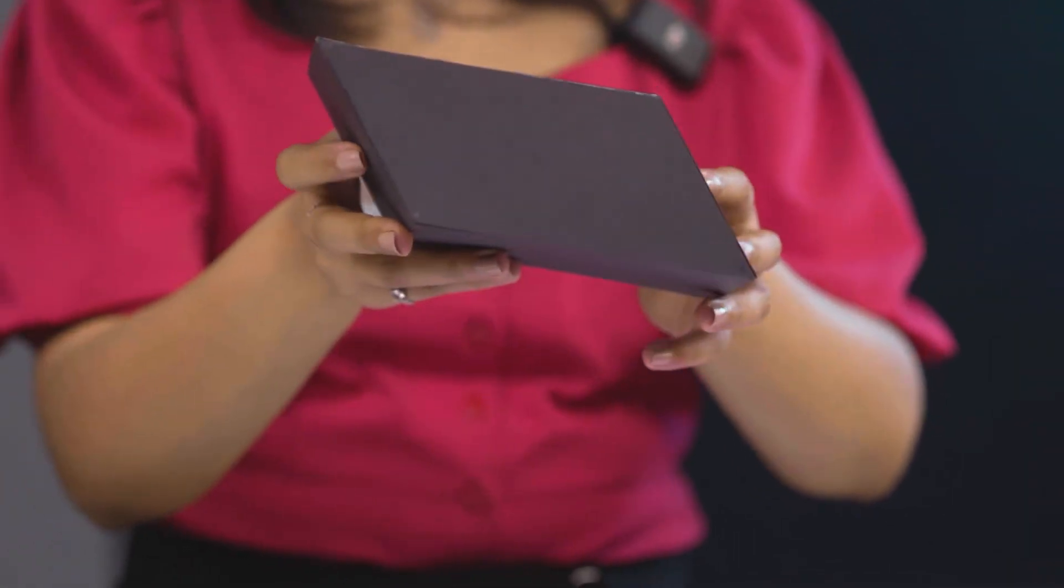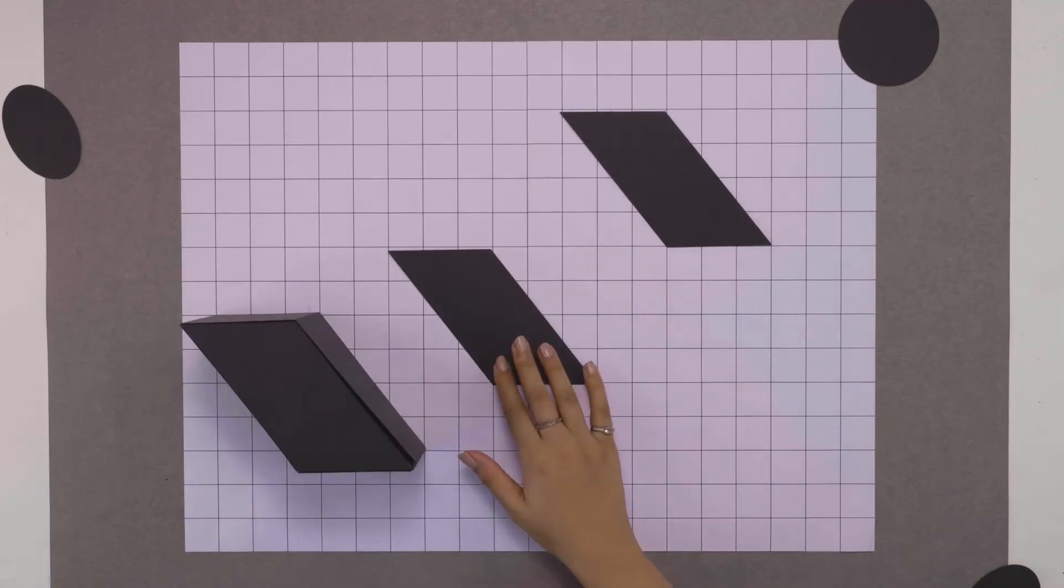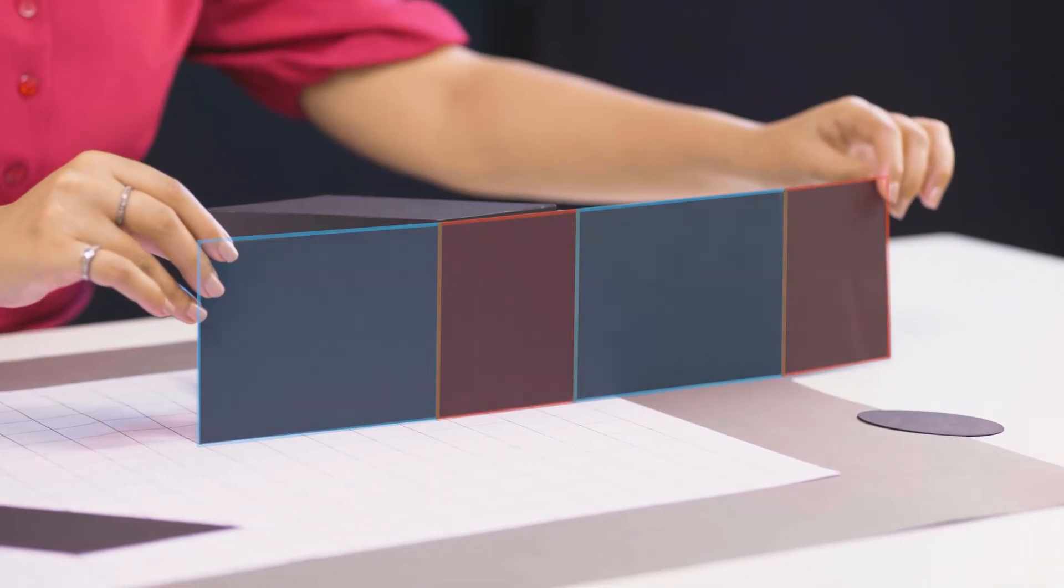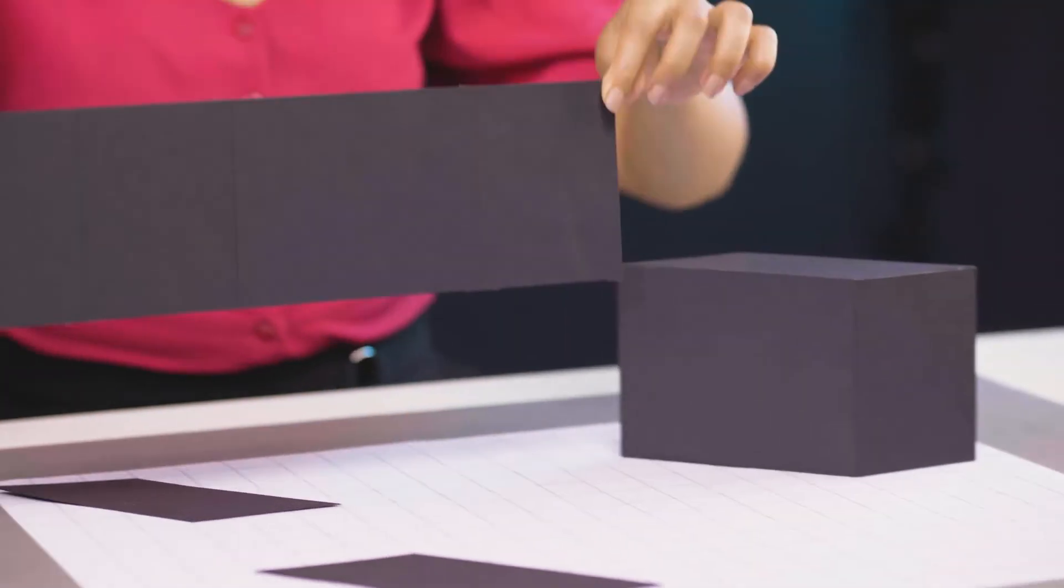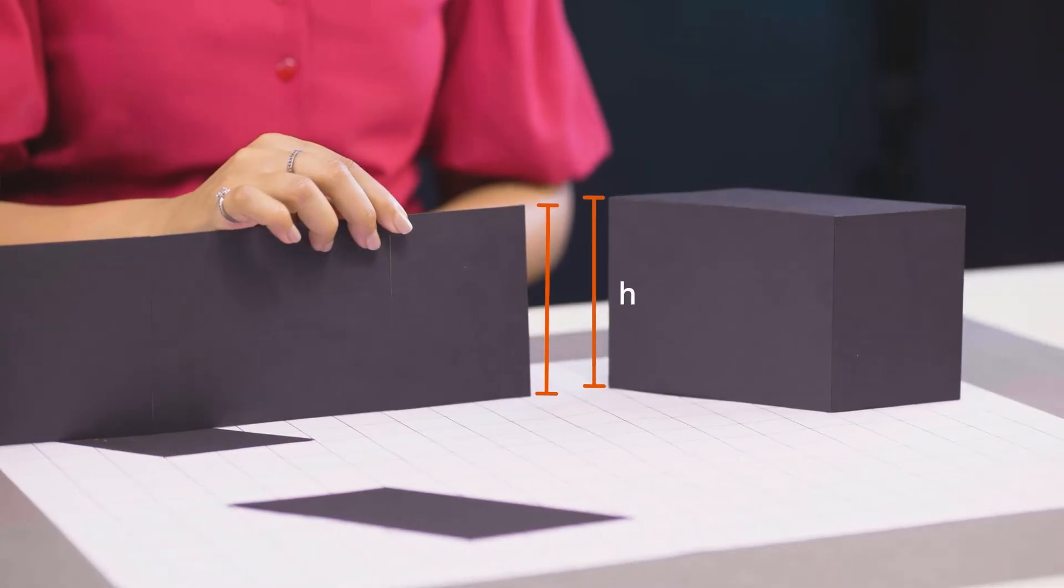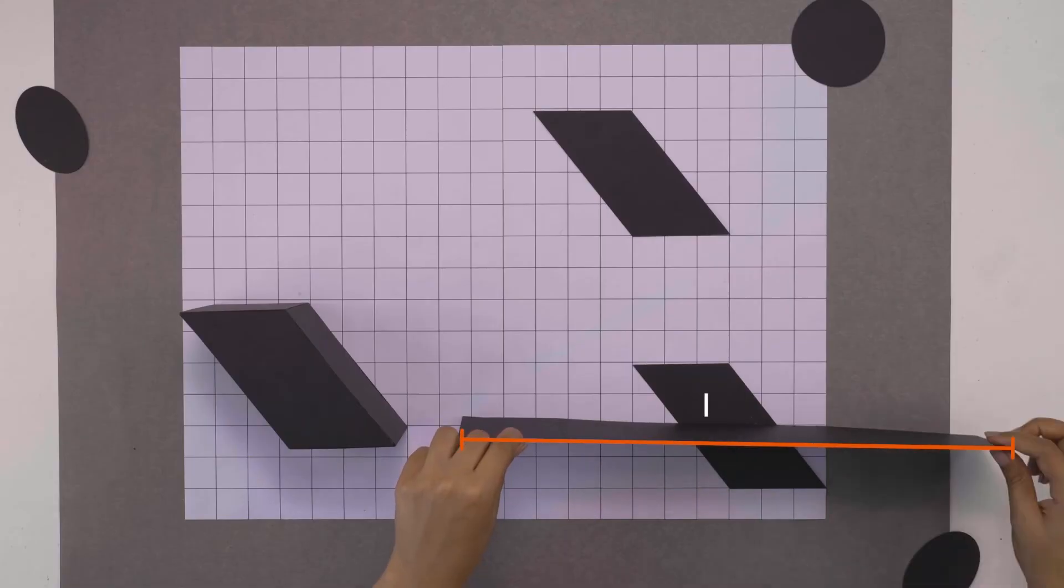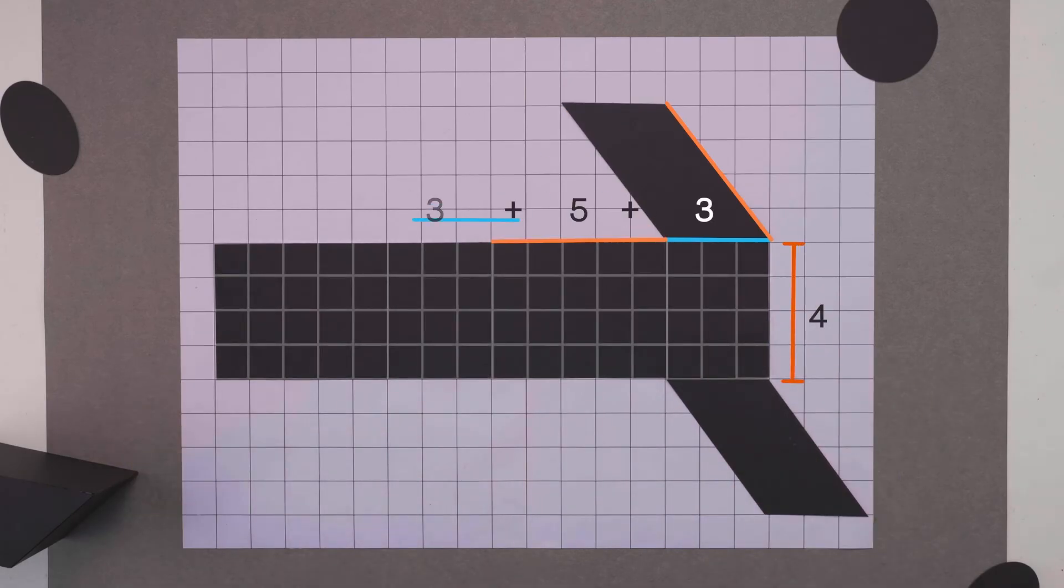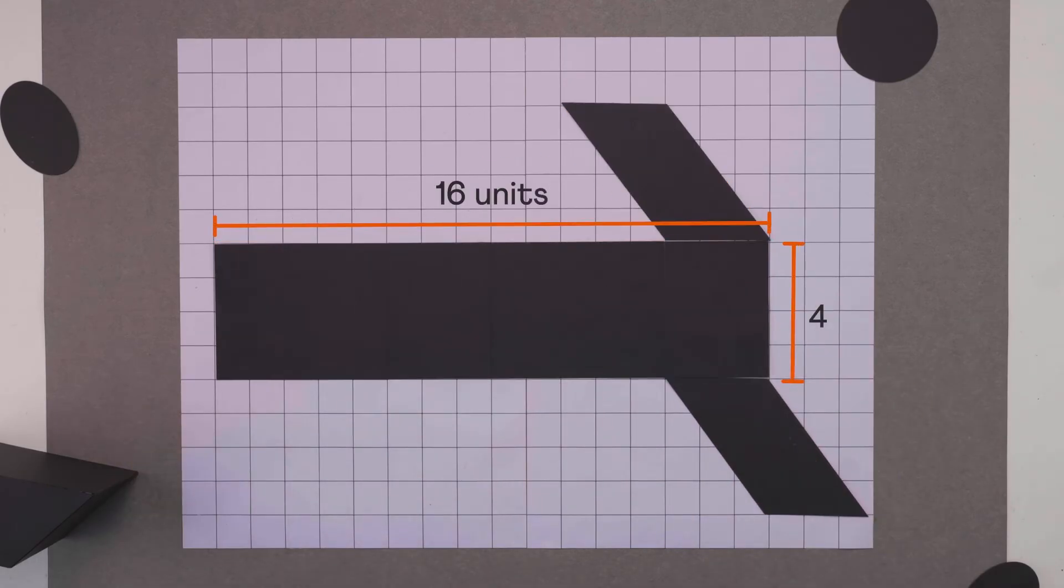Let's unfold this prism with a parallelogram base and see how it looks. We get two equal parallelograms from its top and bottom. All these faces are rectangles, together they form a bigger rectangle. Its breadth equals the height of the prism and its length equals the perimeter of the parallelogram, that is 3 plus 5 plus 3 plus 5, or 16 units.